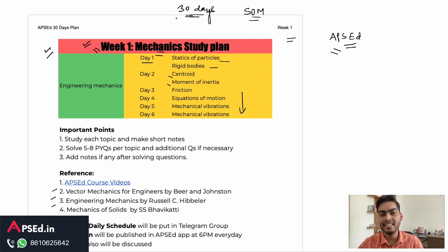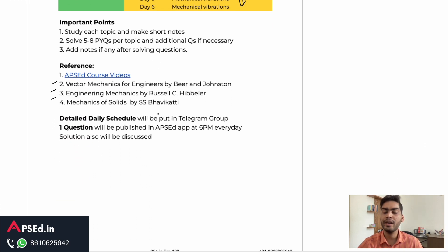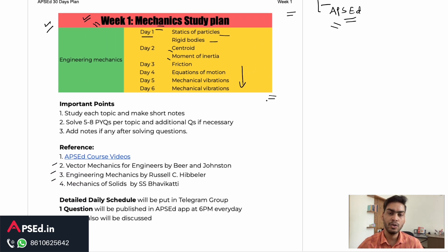We also have a surprise for you: if you like this plan, we will provide a study plan for your entire preparation, covering all the important topics and how many days you may need for each. You can modify the plan as per your need — whether you are a third-year student, final-year student, have dropped out, or are working somewhere. Try to use this for the first week and let us know in the comments if you find it useful. Join the Telegram group and start your preparation.